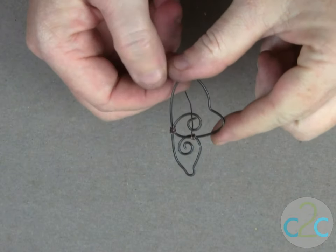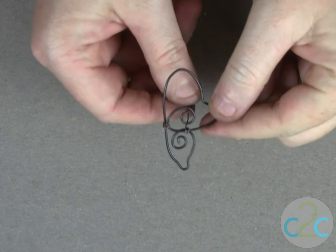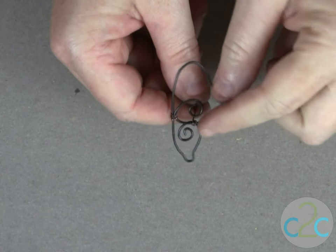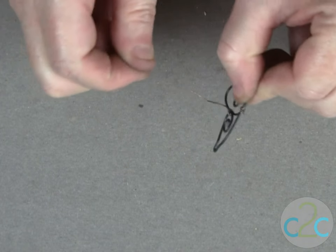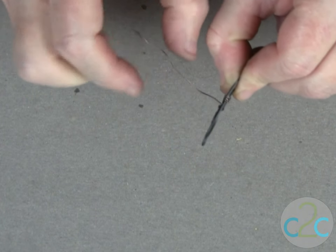Once you have your butterfly wing shape completely refined, then what you'll do is you'll secure where these edges touch and to do that you'll use a separate piece of the 26 gauge wire.